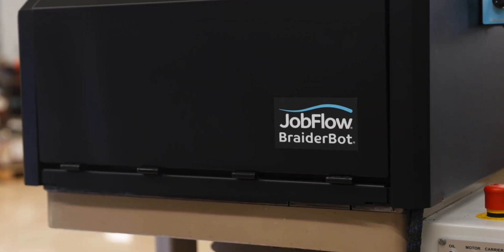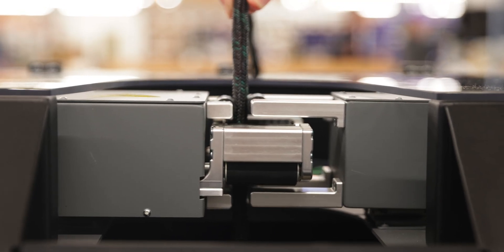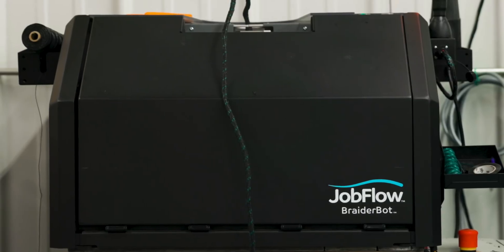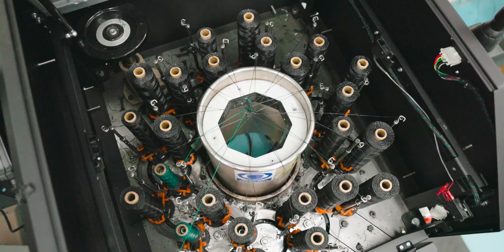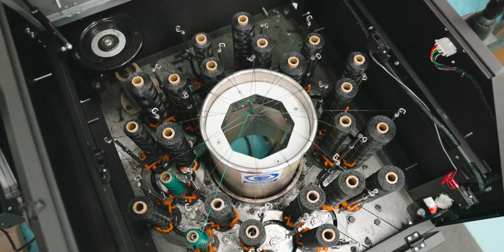Meet BraiderBot, the world's first co-botic add-on for braiders that can actually handle complex wire harnesses. It's available today on 24 carrier braiders from Cobra as well as the New England Butt Wardwell-style machines.